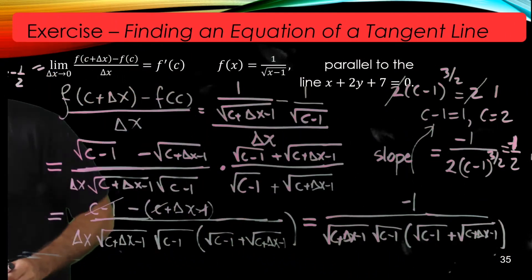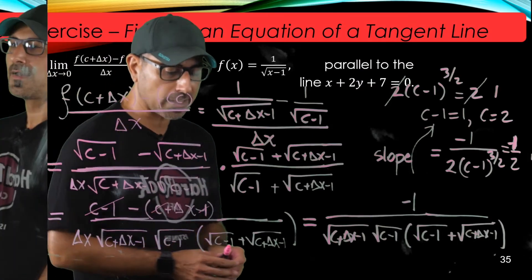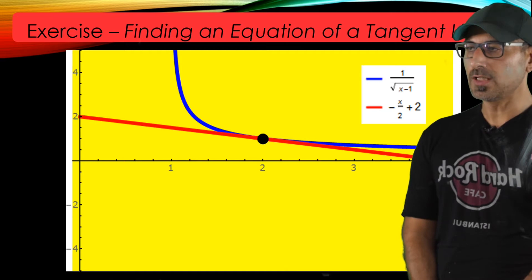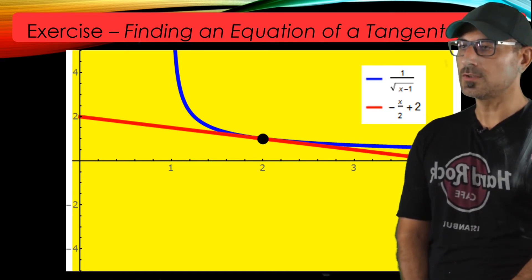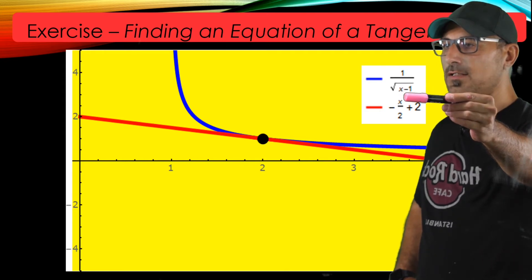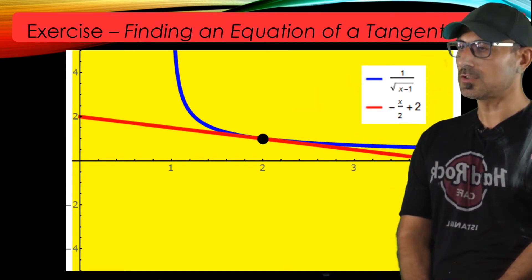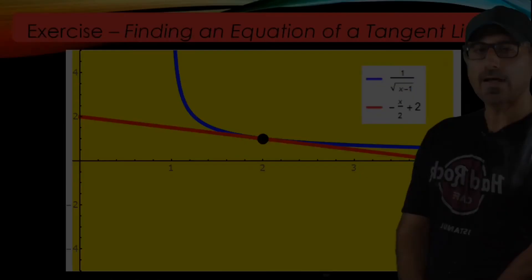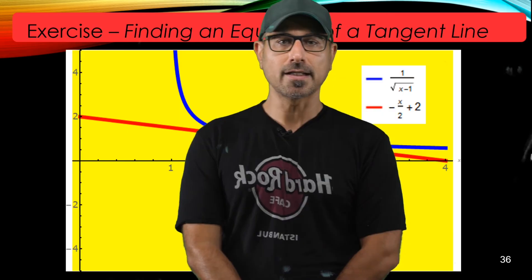The point we were after is c equals 2, so at that point the slope of the tangent line is negative one-half. Here are the graphs of the function and its tangent line at x equals 2. The blue curve is 1 over radical(x minus 1), and the red one is the tangent line to the curve at that point. Thanks for watching, I'll see you in another video, bye.